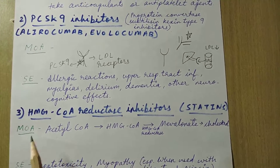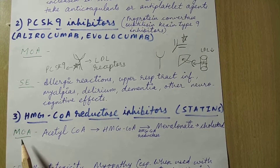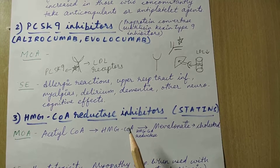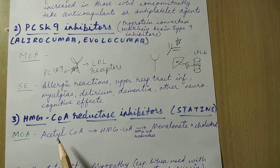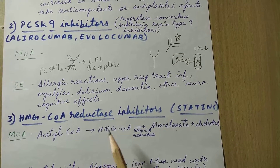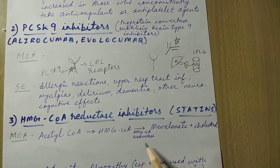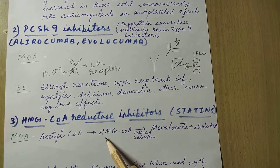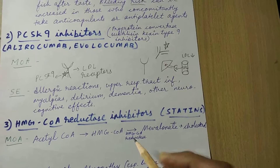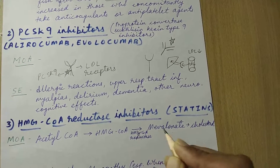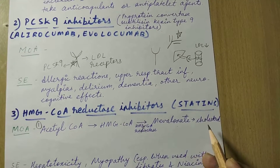The last and most important drug is HMG-CoA reductase inhibitors, also called statins. The mechanism of action is that statins decrease cholesterol synthesis inside the liver. Acetyl-CoA is converted to HMG-CoA, which is converted to mevalonate, and then to cholesterol. The rate-limiting step is the conversion of HMG-CoA to mevalonate, catalyzed by HMG-CoA reductase. Statins inhibit this enzyme, resulting in decreased cholesterol formation.